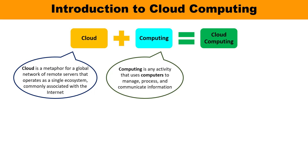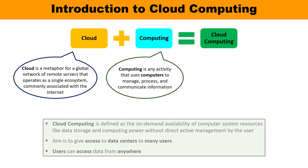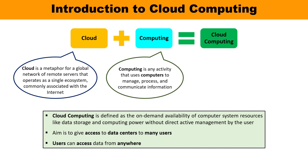Cloud computing can be defined as the on-demand availability of computer system resources. On-demand availability means whenever there is a requirement, we can demand it. These resources can be used for data storage and computing. The most interesting point is that no user is involved in active management. The objective is to give access to data centers to many users, who can access data from anywhere. Now, who is actually using this cloud? Let me give you some examples.